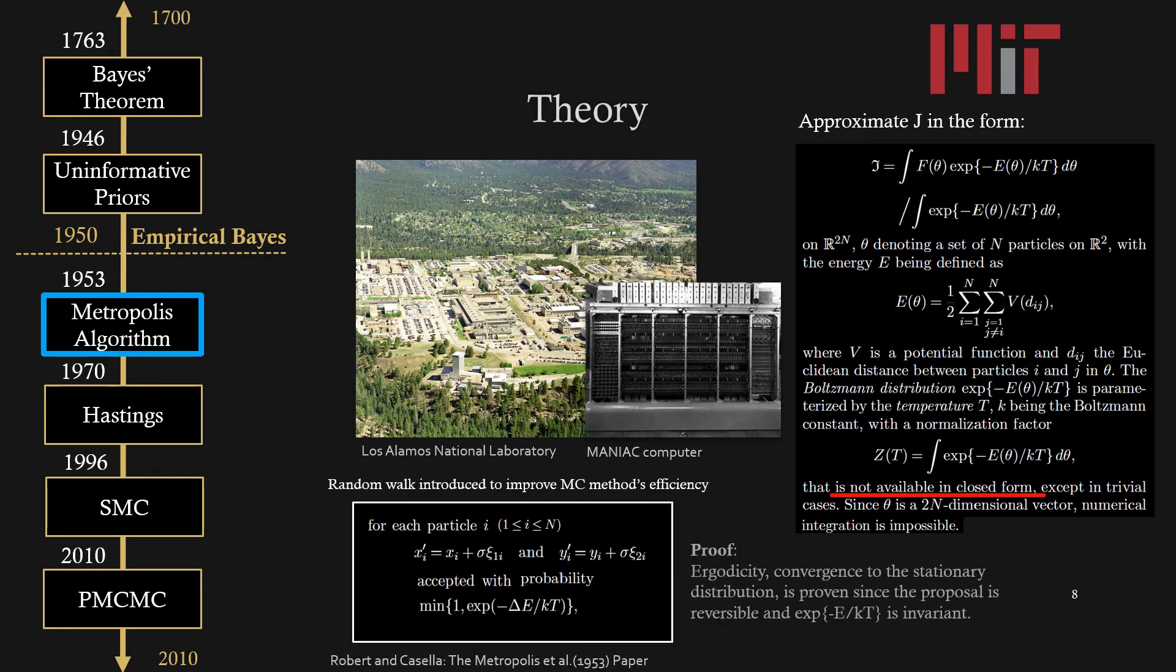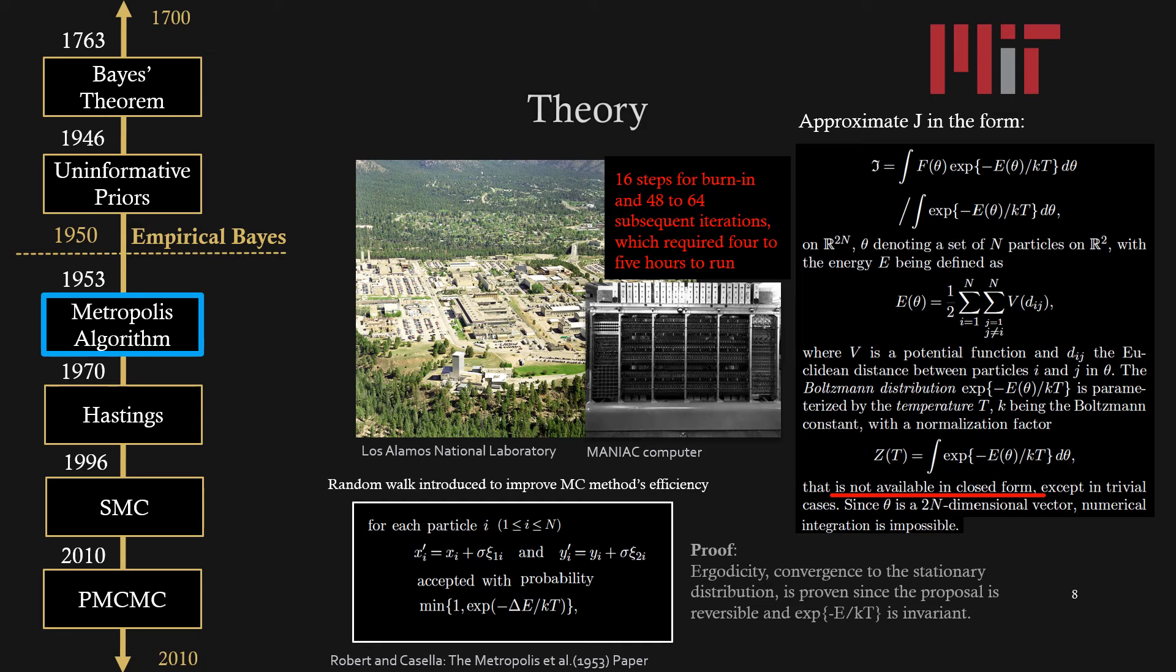The solution that Metropolis et al came up with was to introduce a random walk into the Monte Carlo sampling method. On the bottom you can see an example of the algorithm that Metropolis created, where for each particle there's a random walk for x and y. These particles will be accepted if it's within this probability, otherwise they'll be rejected. It's also interesting to note that the acceptance probability looks very similar to the one in simulated annealing, and that's not a coincidence—it actually is very closely related. In terms of proof for ergodicity or convergence to the stationary distribution, it was proven in the paper since the proposal is both reversible and the acceptance probability is invariant.